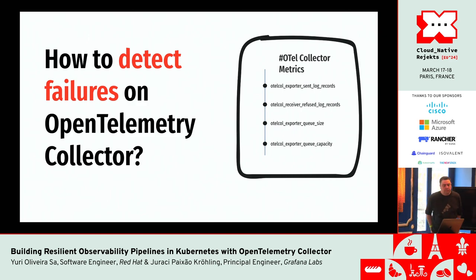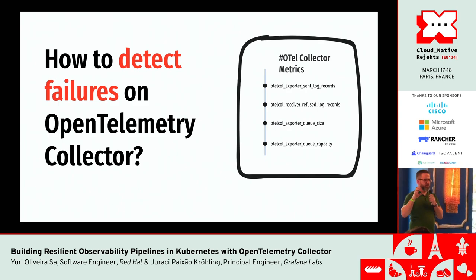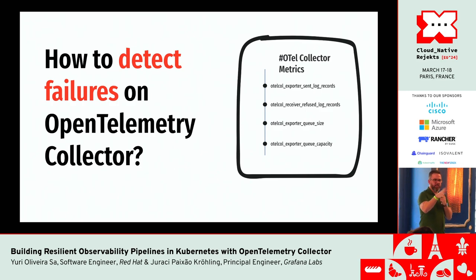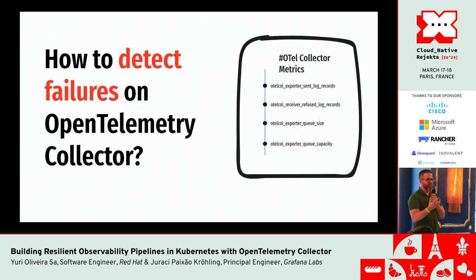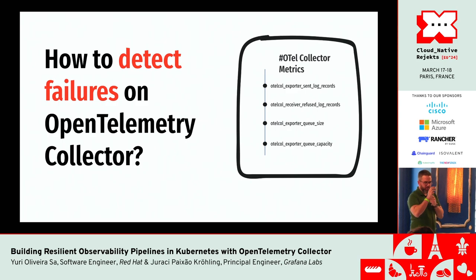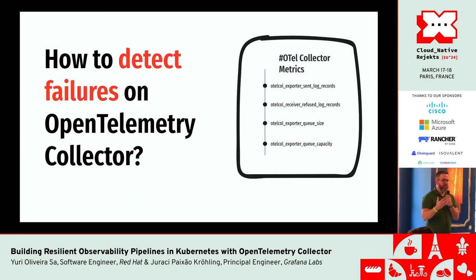So we've covered receivers, processors, exporters, and configuration. But how can you detect failures of your OpenTelemetry Collector? How do you know exactly when failures occur? We brought four examples of metrics you can use daily. Most of you — SREs or DevOps engineers — can use these in your dashboards: the OTel exporter sent log records metric to check if logs are being exported to your backend like Grafana Loki or another APM system.